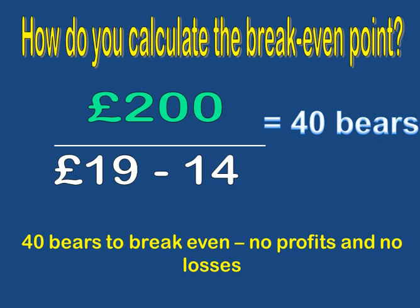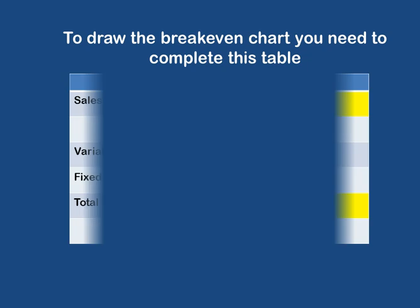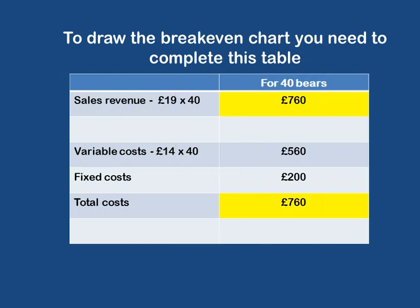In the exam, when you're practising, you need to do a quick table which looks like this. You need to complete a table that is going to help you draw your breakeven chart. What we need to do is calculate the sales revenue, the variable cost, the fixed costs and the total costs at the breakeven level of sales.